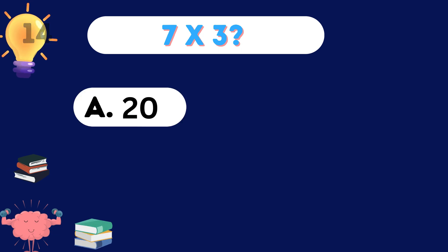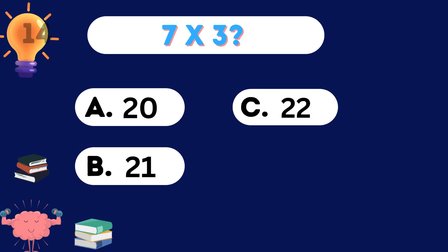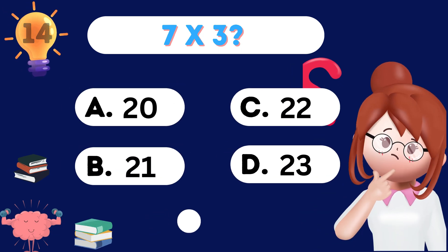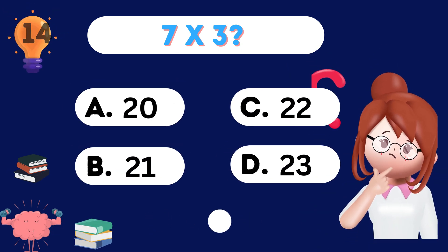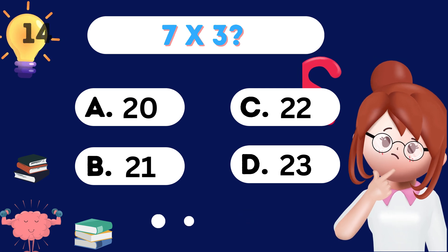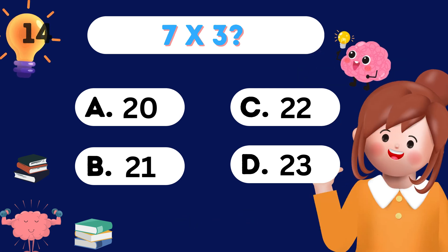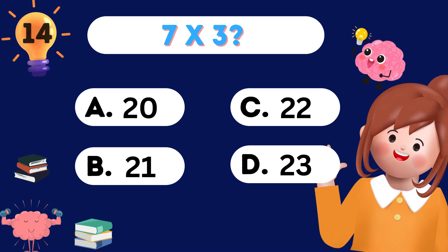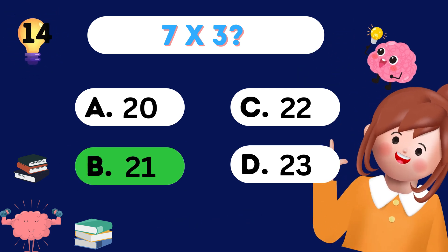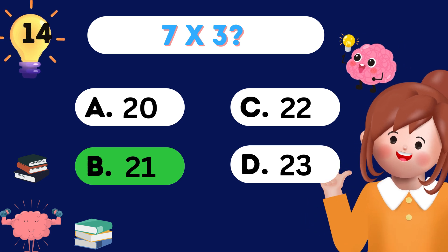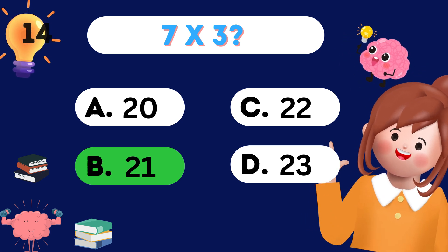What's 7 times 3? 7 times 3 is 21. Hooray!